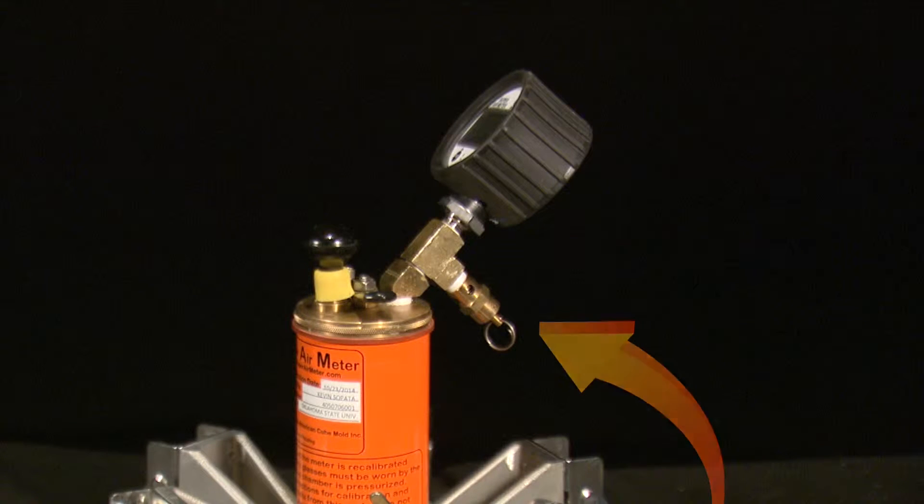If you have an older Super Air Meter with a pop-off valve and want to install the improved needle valve, simply follow these steps to replace the pop valve with a new needle valve available at superairmeter.com.